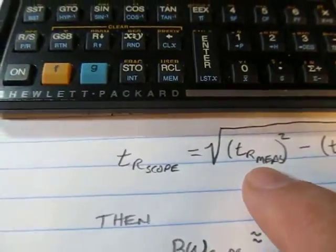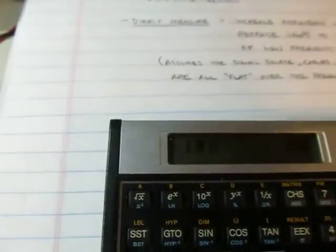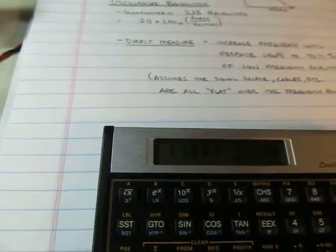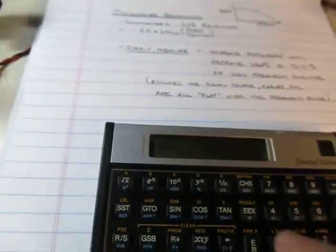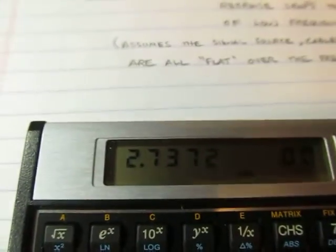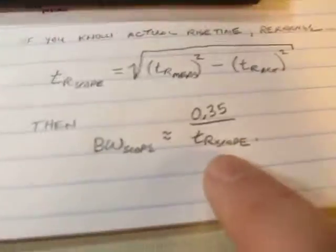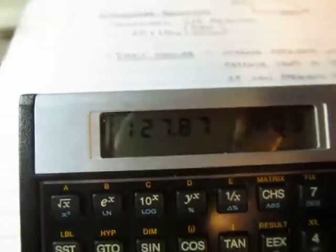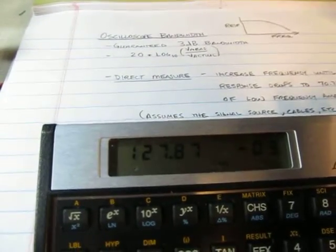Plugging that into the equation: I take the measured rise time of 3.45 nanoseconds, square that, then subtract the square of the actual signal rise time of 2.1 nanoseconds, and take the square root. That tells me the rise time of the scope is about 2.74 nanoseconds. Now I can take that 2.7372 nanoseconds, invert it and multiply by 0.35, and that gives an estimated bandwidth of the scope of basically 128 megahertz.